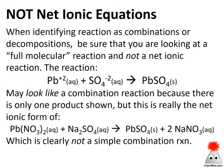One thing that I want to point out just real quick to help you avoid some problems or avoid some misidentifications is when we're talking about combinations and decompositions we're talking about the full molecular type equation. One of the things that we often do is we write what's called a net ionic equation where all we do is show the ions that are reacting. So if we've got a reaction like this, lead plus two ions in solution react with sulfate ions in solution to make lead sulfate solid, that might look like a combination reaction because we only have one product, but because these are ions, this is a net ionic equation.